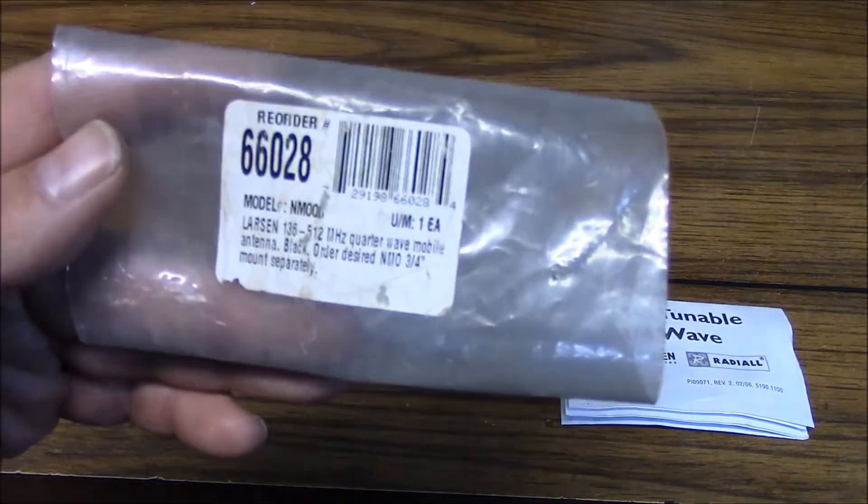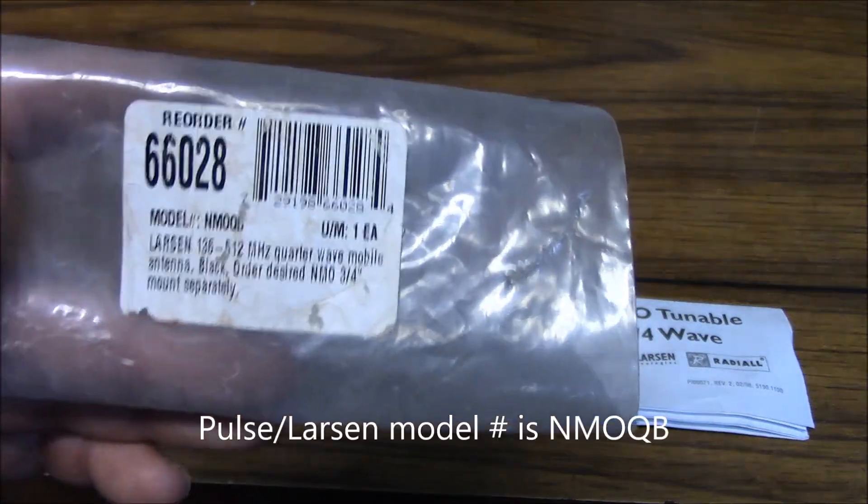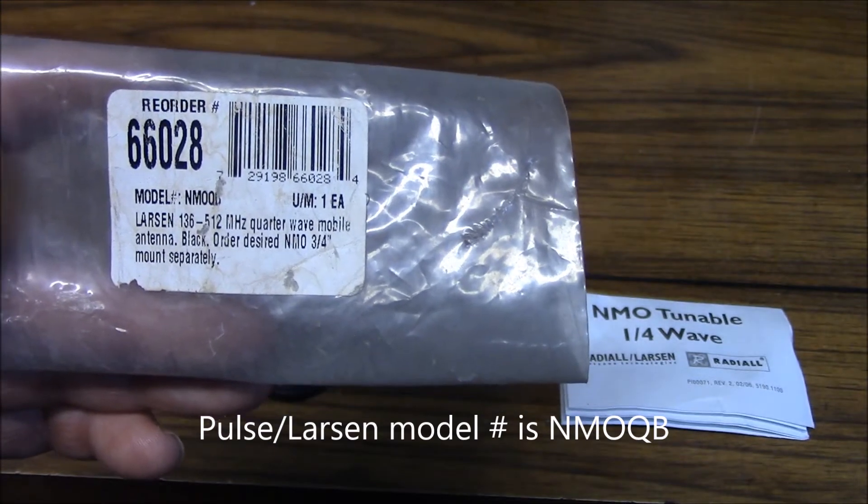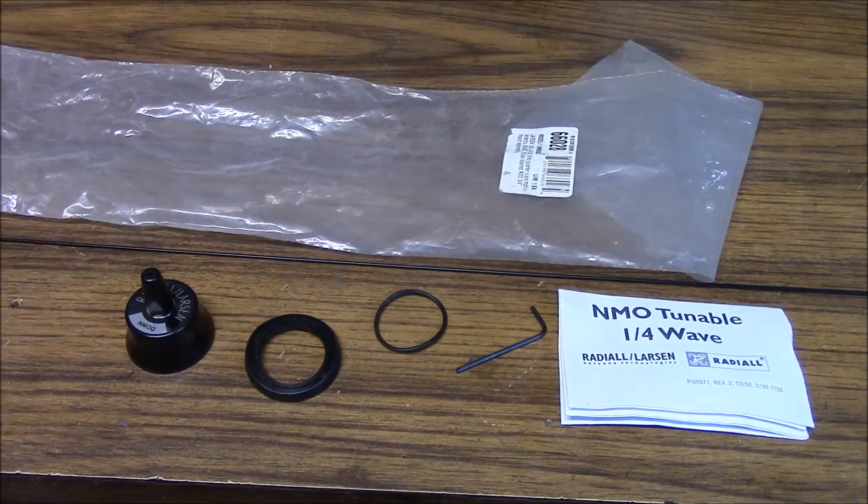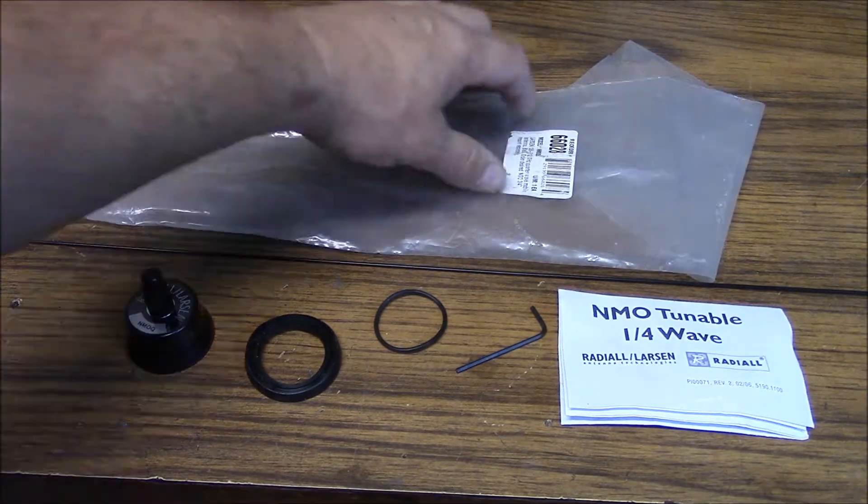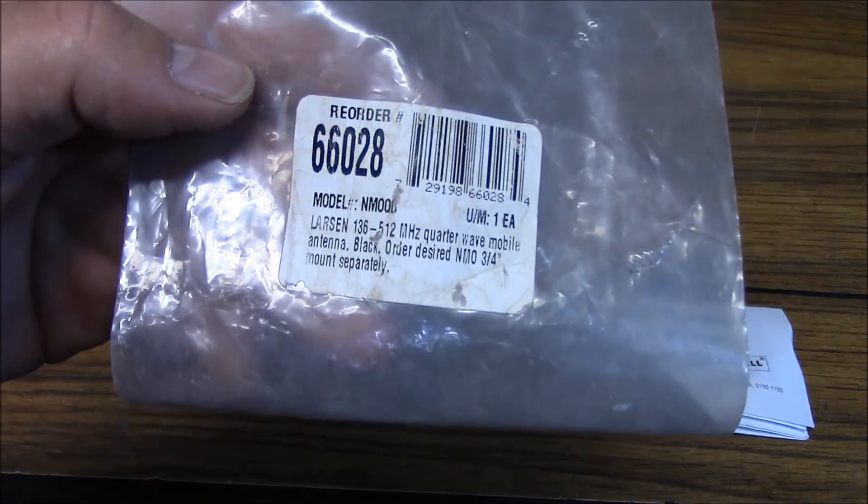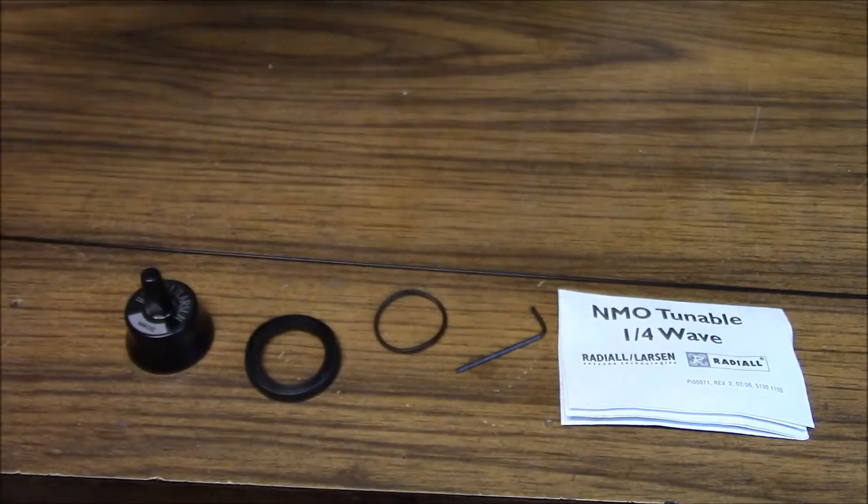Now you can see here, this is the part number for this particular antenna from Tesco which is where I get most of my stuff, and you can see here that it says 136 to 512. Don't let this be you. I've seen this before with people that they get this antenna and they think it's some kind of a broadband antenna. Basically, that's the range that this antenna will cover by cutting it.